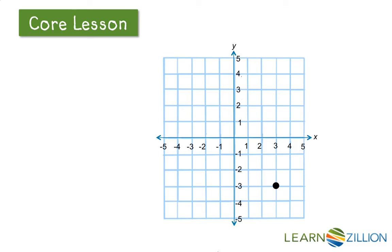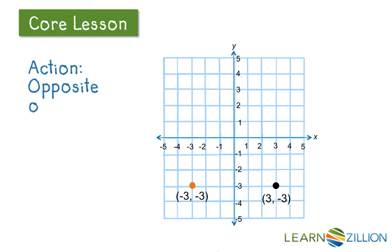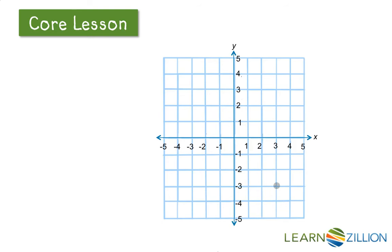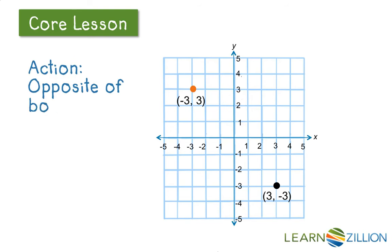Now we have a point in quadrant 4, and we're going to change the x coordinate to negative. That will move it to quadrant 3, reflecting over the y axis. If we use that same starting point again and take the opposite of both coordinates, we will then move it to quadrant 2.